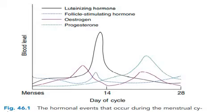The lifespan of the corpus luteum is constant, at about 14 days. Progesterone has a thermogenic effect on the hypothalamus and it increases the basal body temperature by up to 1 degree Celsius in the second half of the menstruation cycle.